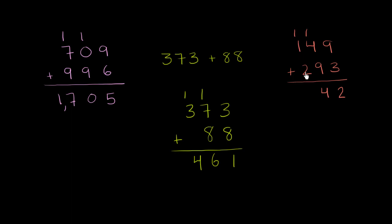And then 1 plus 1 plus 2 is 4, but this is in the hundreds place. So this is actually 100 plus 100 plus 200, or 400. And we're done.